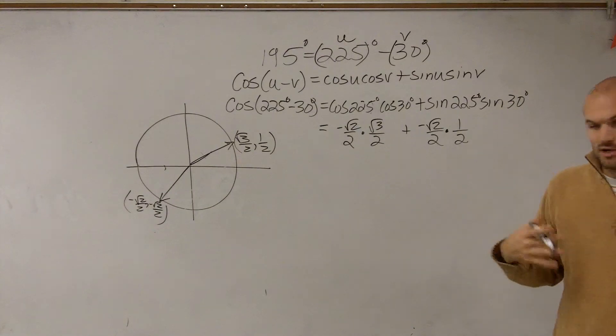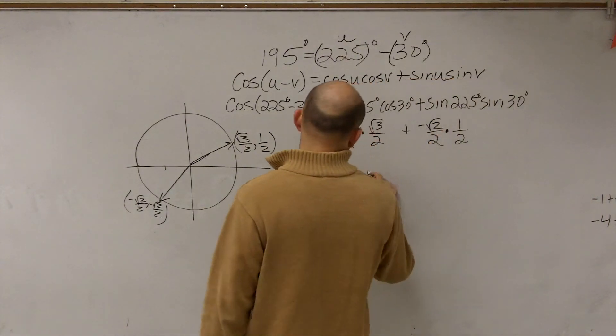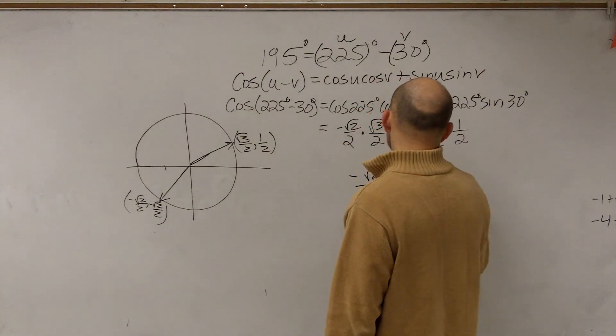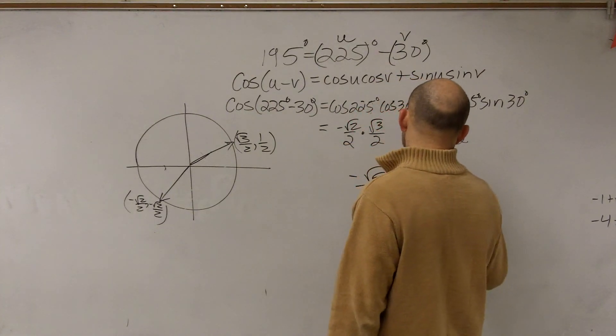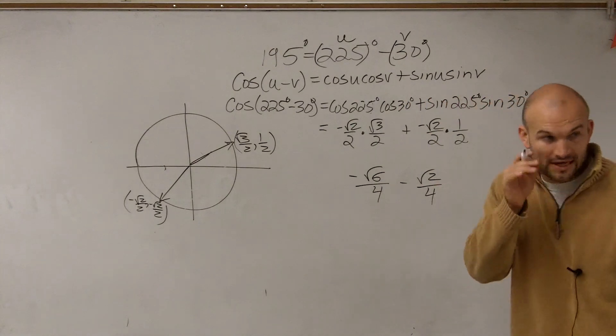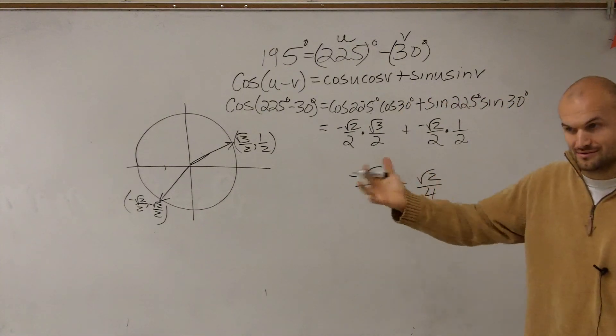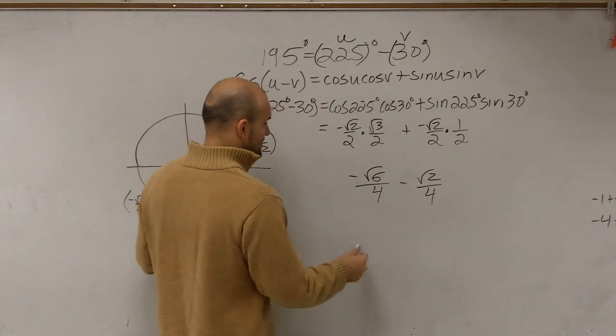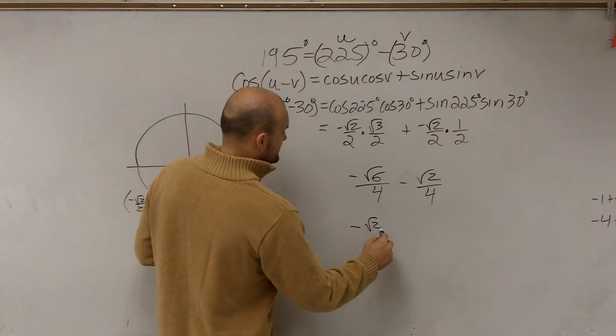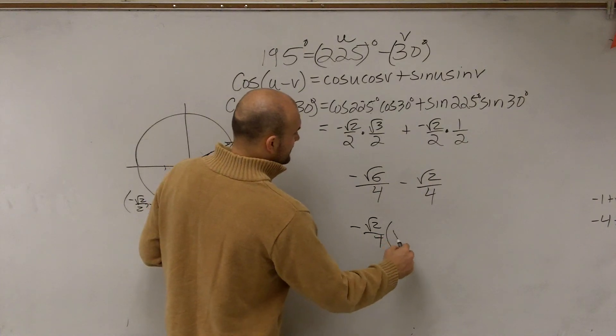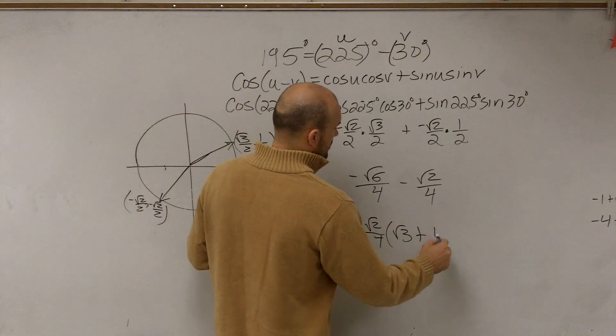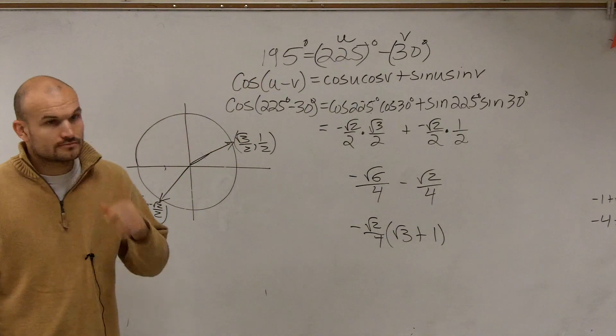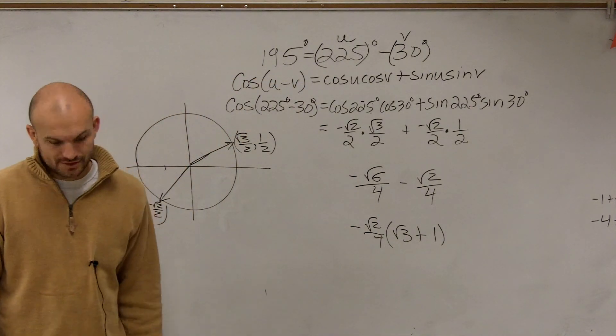So now let's multiply across. We get negative square root of 6 over 4 plus or minus the square root of 2 over 4. And what we notice is we can just factor out our common terms. So factoring out our common terms is going to be negative square root of 2 over 4, which is going to leave us with a square root of 3 plus 1. And that's your final answer.